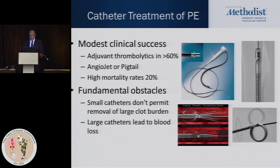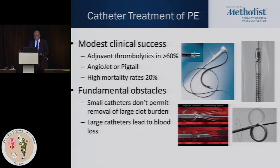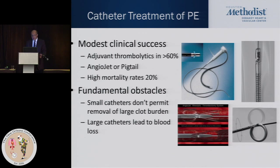Thrombolytic therapy involves up to 72 hours of infusion with repeat trips to the cath lab. Catheter treatment of pulmonary embolism is achieved primarily by three main means: the AngioJet, the EKOS catheter — an ultrasound catheter with a tip that helps break up the clot — and a pigtail. These have had modest clinical success using thrombolytics as adjuvants, but mortality rates are high because these patients are so sick. The fundamental obstacle is that small catheters don't permit removal of a large clot burden, but larger catheters lead to blood loss.